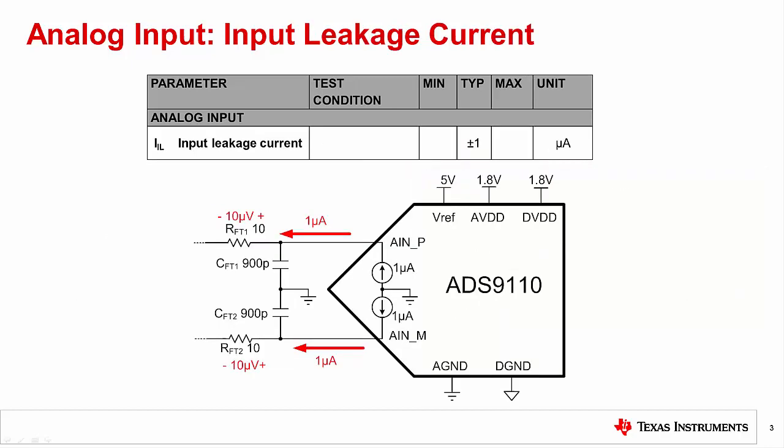Now let's look at input leakage. The input leakage is a DC current that flows into or out of the data converter input pins. This current results from internal ESD protection structures and other parasitic structures. This current can be modeled as a DC current source on both ADC inputs and is typically in the nanoamp to microamp level. You can think of input leakage current to be similar to bias current on the input of an amplifier.